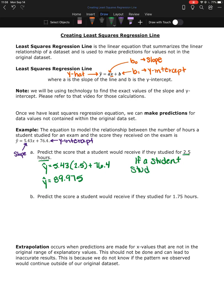they could expect to get an 89.975 on their exam. Now this value that we found, this 89.975, this is not a guarantee.